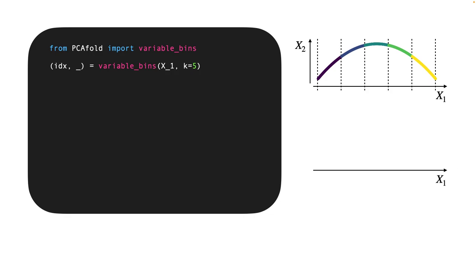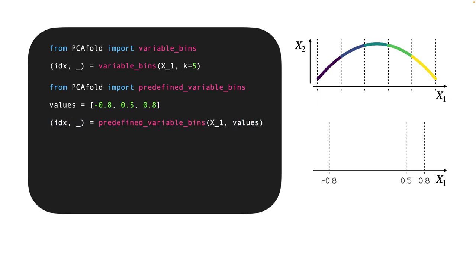We also allow the user to have more flexibility in where are the splits in a variable's range. Say we'd like to create clusters such that cluster boundaries happen at minus 0.8, 0.5, and 0.8. And for this, you can use the function predefined_variable_bins and pass a list of those split values. And in this example, the result will be four clusters along the range of variable x1.